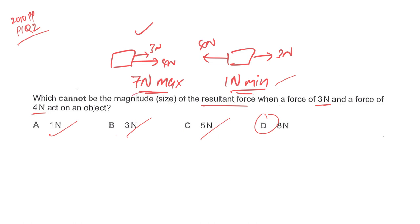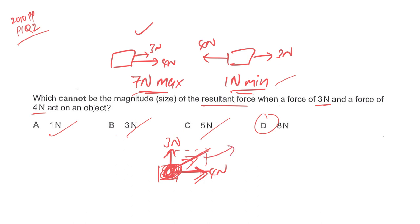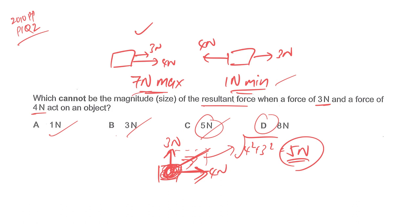Another important case is when both forces are at 90 degrees to each other. If 4 Newton and 3 Newton are at 90 degrees — imagine one person pulling you to the right with 4 Newton and another pulling at 90 degrees — you move diagonally. For this 90-degree case, instead of drawing a vector diagram, use the Pythagorean theorem: the resultant equals the square root of 4 squared plus 3 squared, which gives 5 Newton.